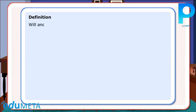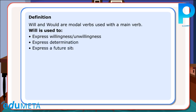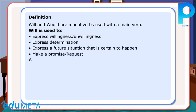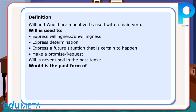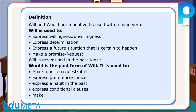Definition: Will and would are modal verbs used with a main verb. Will is used to express willingness or unwillingness, express determination, express a future situation that is certain to happen, and make a promise or request. Will is never used in the past tense. Would is the past form of will. It is used to make a polite request or offer, express preference or choice, express a habit in the past, express conditional clauses, and make reported speech.